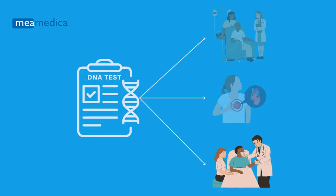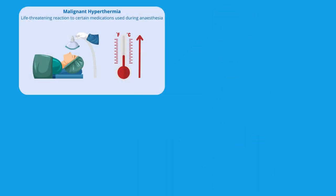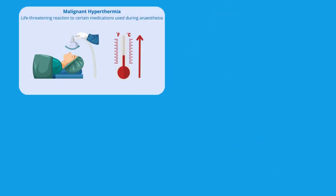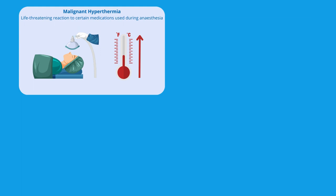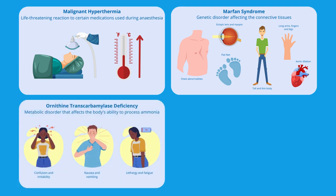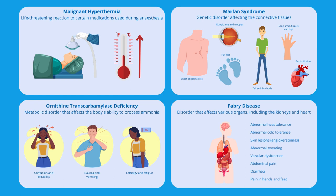In this DNA test, you can also find out if you have an increased risk of developing other diseases, such as malignant hyperthermia, which is a rare but potentially life-threatening reaction to certain medications used during anesthesia. Marfan syndrome, which is a genetic disorder affecting the connective tissues, primarily in the heart, eyes, and skeletal system. OTC deficiency, which is a rare metabolic disorder that affects the body's ability to process ammonia. Fabry disease, which is an inherited disorder that affects various organs, including the kidneys and heart. And more.